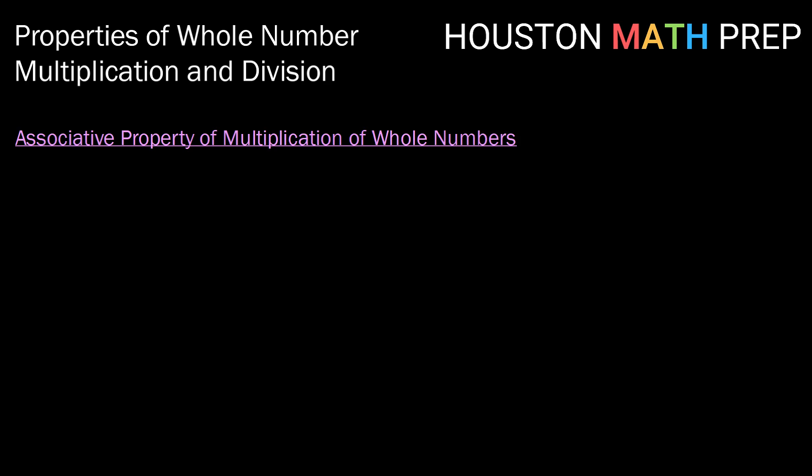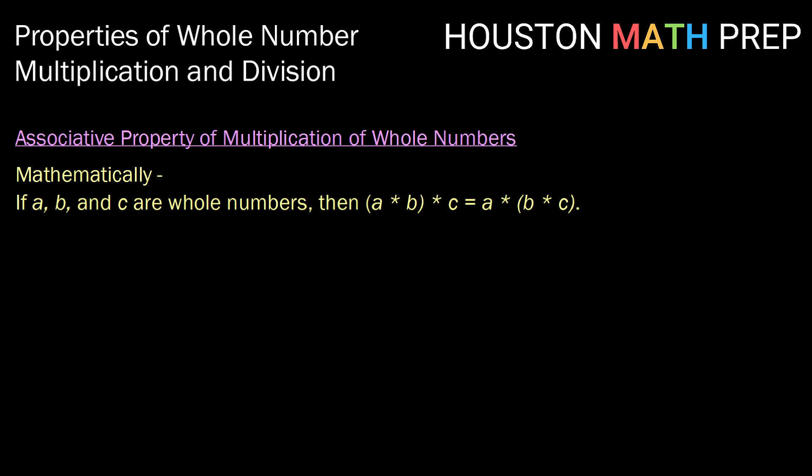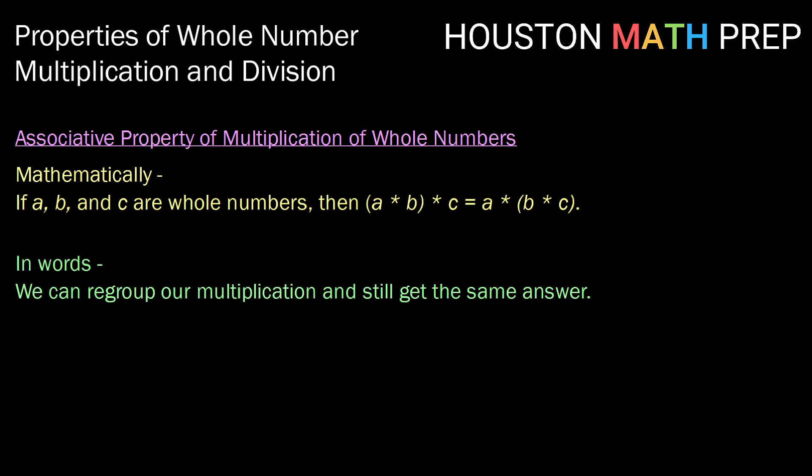The associative property of multiplication of whole numbers, stated mathematically, is: if a, b, and c are whole numbers, then a times b grouped first, then times c, is equal to a times b times c grouped first. In words, we might say we can regroup our multiplication and still get the same answer.